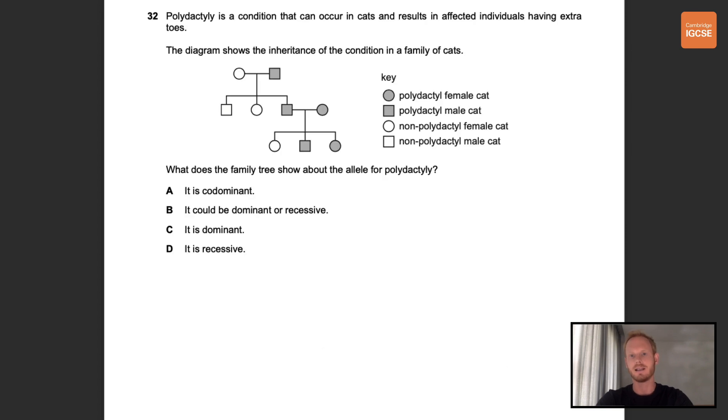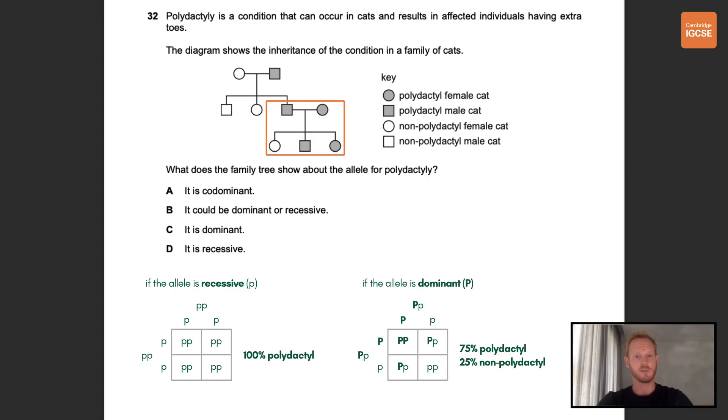Number 32. Polydactyly is a condition that can occur in cats and results in affected individuals having extra toes. The diagram shows the inheritance of the condition in a family of cats. What does the family tree show about the allele for polydactyly? Okay, so if we look to the bottom right of the diagram we can see that both parents in the second row have polydactyly but not all of their offspring do. Now if the allele were recessive both parents and all three offspring would be homozygous recessive polydactyl cats. The fact that one of the offspring doesn't have the condition means that both parents must be heterozygous for the gene. The allele is therefore dominant and the correct answer is C. Pause the video and study the Punnett squares if you don't quite get what I've just said and go and watch my video on monohybrid inheritance if you need a more comprehensive overview.